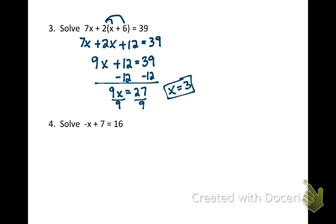Okay, in our last one here, we have negative x plus 7 equals 16. So I'm going to go ahead and just make that negative 1x plus 7 equals 16. So the first thing we're going to do is subtract the 7 over, and then divide by the negative 1. This is the part that most people forget here is to divide by a negative 1.